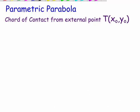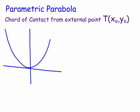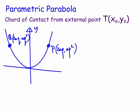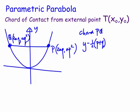Now, to start with, for the parametric way, we need basically the general chord's equation. We still have x squared equals 4ay. Point P is (2ap, ap squared) and point Q is (2aq, aq squared). The general chord PQ has equation: y minus one half times (p plus q) times x plus apq equals zero.